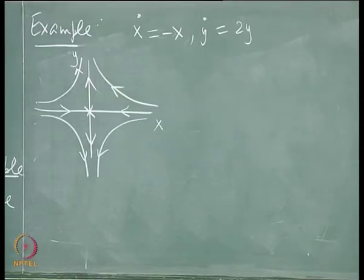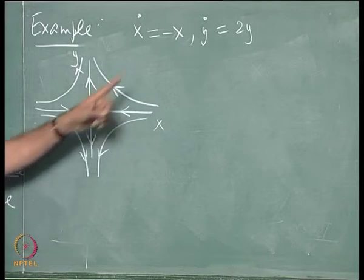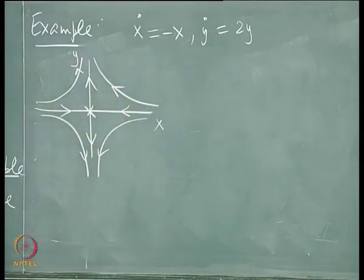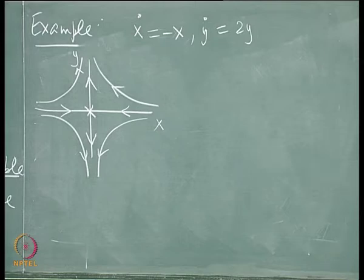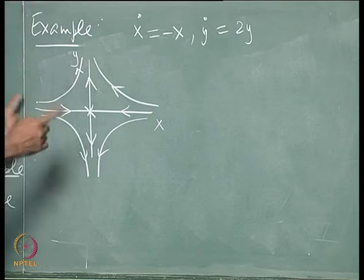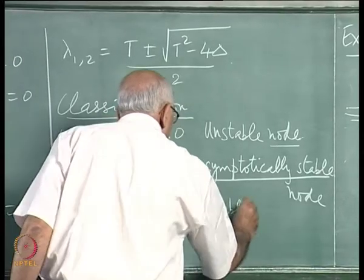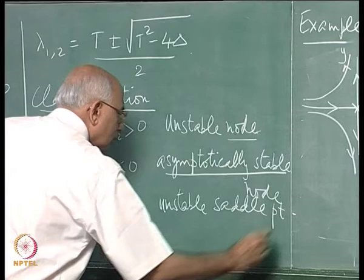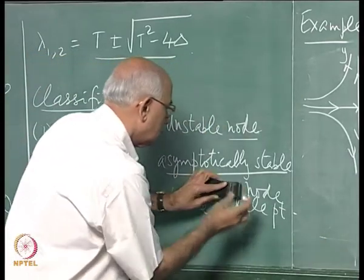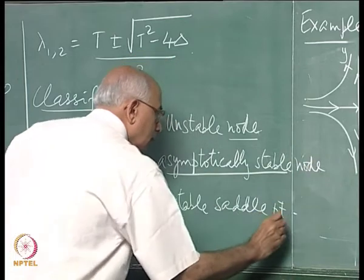What is the shape of these trajectories? They look like hyperbolas, though not rectangular hyperbolas unless the coefficients are equal in magnitude. The y variable is exploding much faster than x is going to 0, but the shape is roughly hyperbolic. This is an unstable critical point called a saddle point.